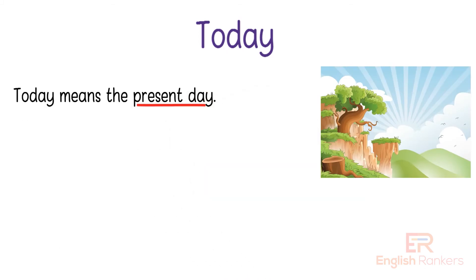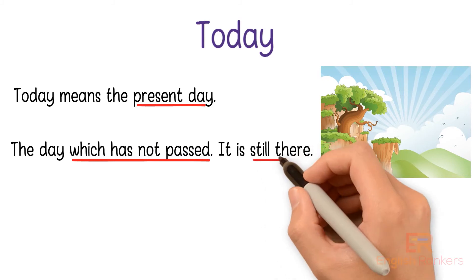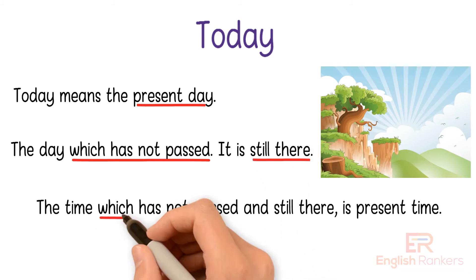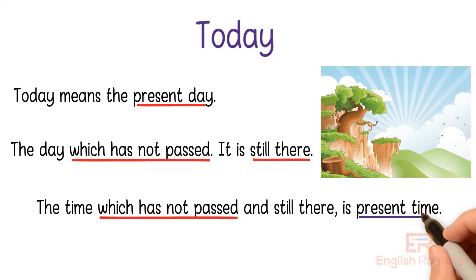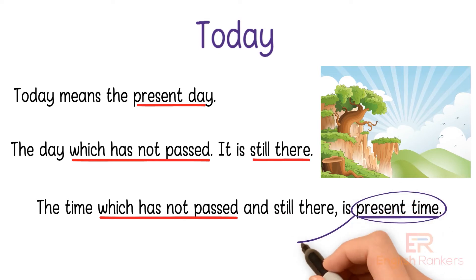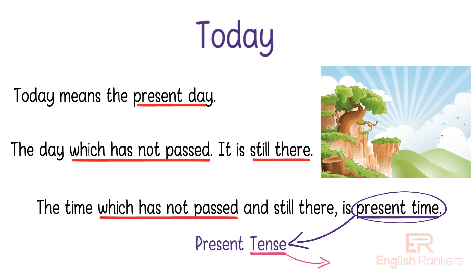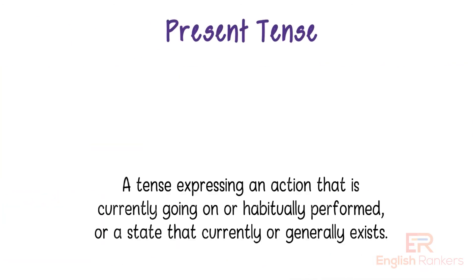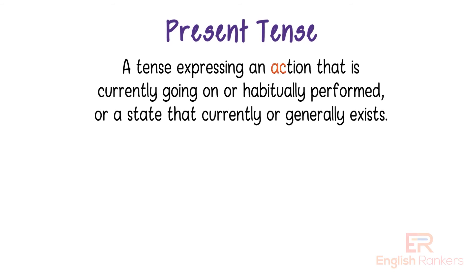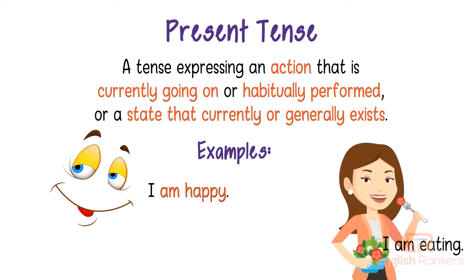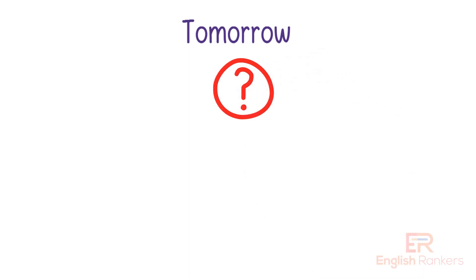What do you understand by today? Today means the present day — the day which has not passed; it is still there. The time which has not passed and is still there is present time. Present time is also called present tense, as tense means time. We can define present tense as: a tense expressing an action that is currently going on, or habitually performed, or a state that currently or generally exists. For example: I am happy. I am eating.